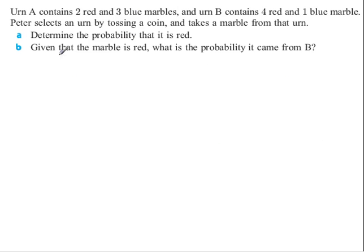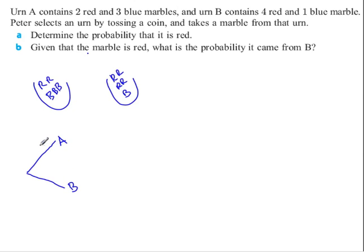All right. So this is a tree diagram, I think. Urn A contains two red, three blue. And then urn B is four red and one blue. Determine the probability that we pick a red one. Oh, you toss a coin first. It takes a marble from that urn. So we'll go, I always like to put the event on the end of the branch. So A or B. Urn A or urn B. So that's a half or a half that I'm going to either A or B.